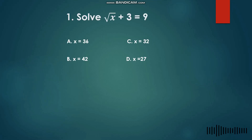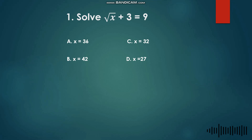Here are some questions that you might encounter during your entrance exams. Number 1: Solve for x — square root of x plus 3 is equal to 9. A) x = 36, B) x = 42, C) x = 32, D) x = 27. You may pause the video if you'd like to give it a try.